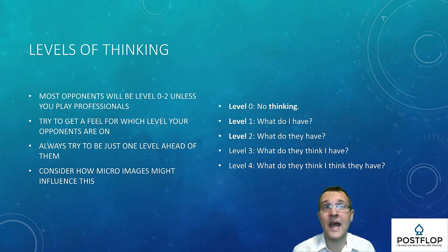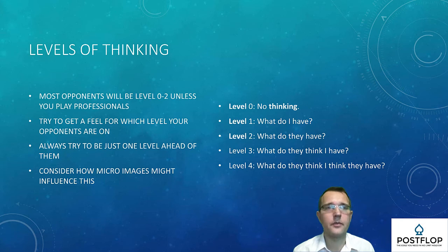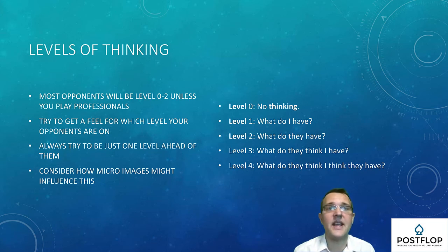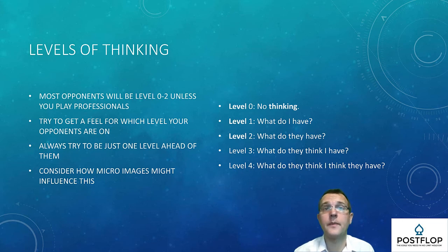A solid loose-aggressive player might have a quiet hour and is then able to leverage this tighter image when he starts playing looser again — his bluffs are more believable. If you're able to pick up on this type of information it can help you be more accurate with your reading of situations. Your own micro image will influence how your opponents view you. If you've been particularly loose, opponents might expect a loose range — so use this information to stay ahead of them by sticking to tighter, value-heavy ranges until your image changes again. Micro images are more important when you play against opponents you don't know well.